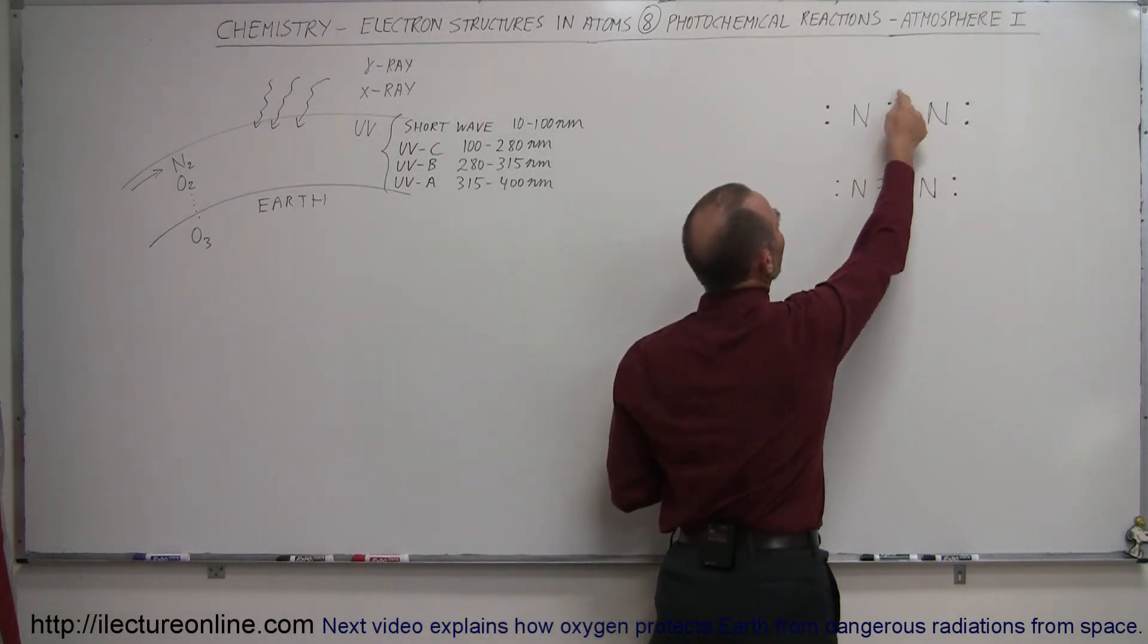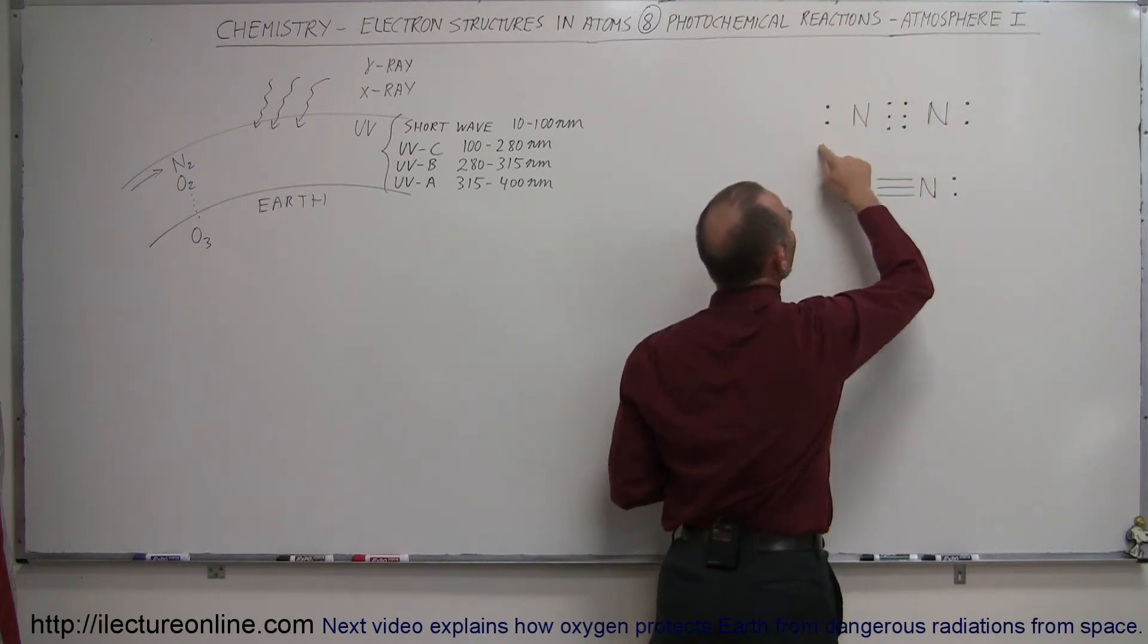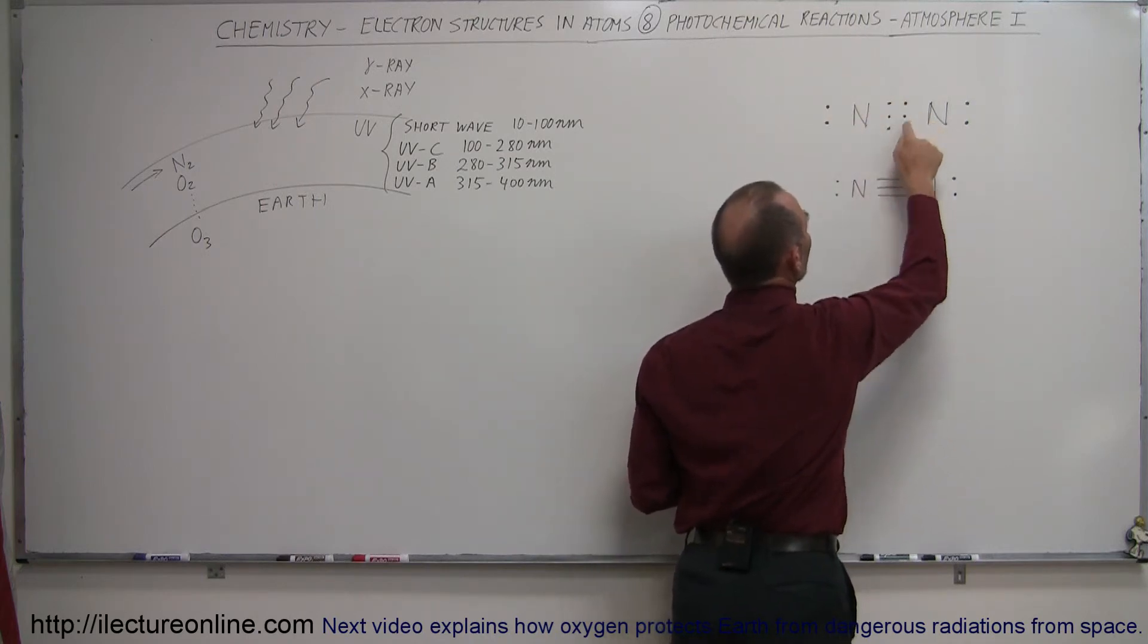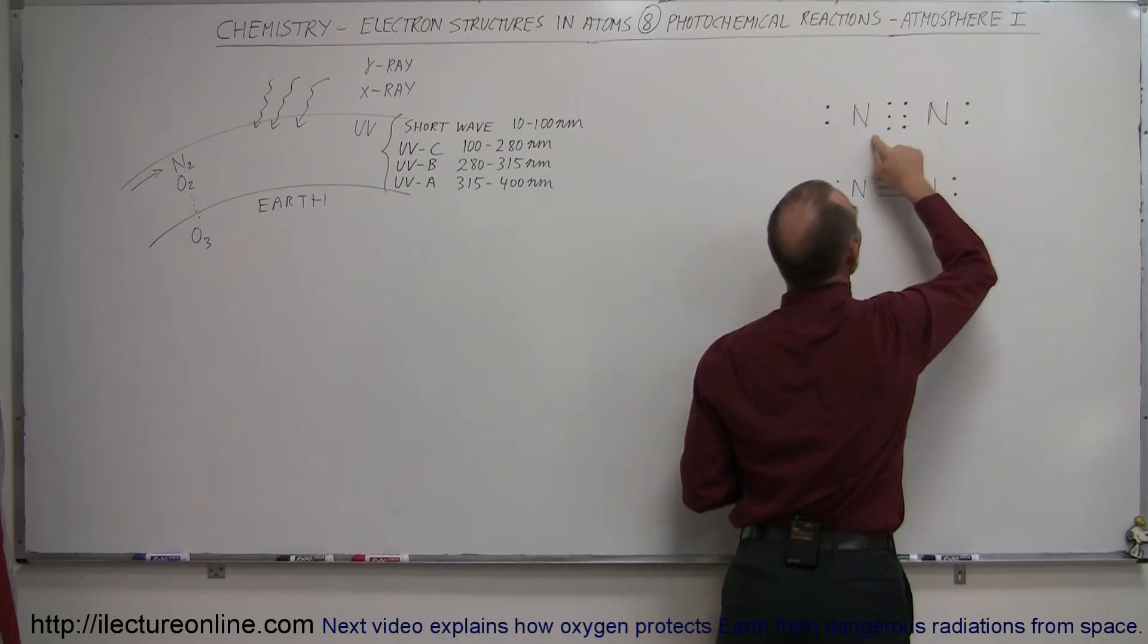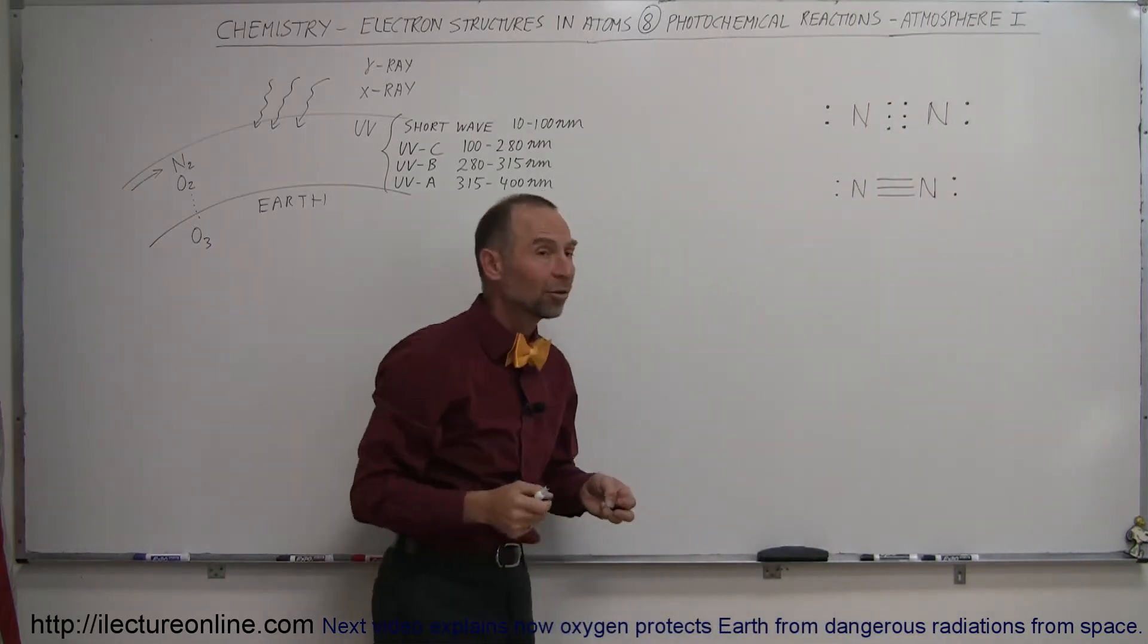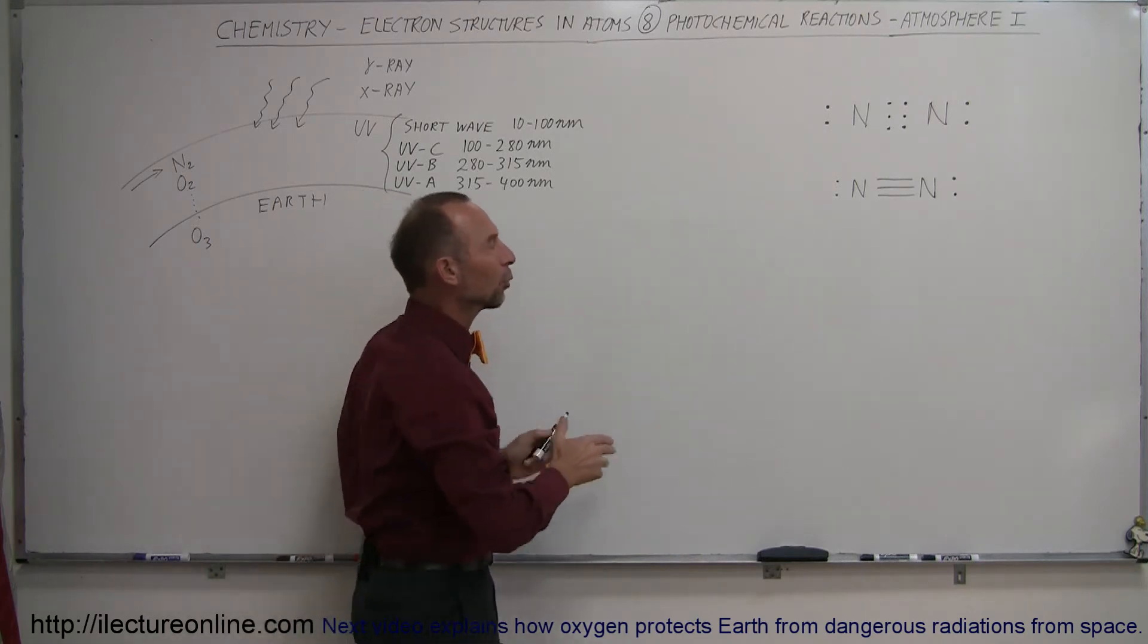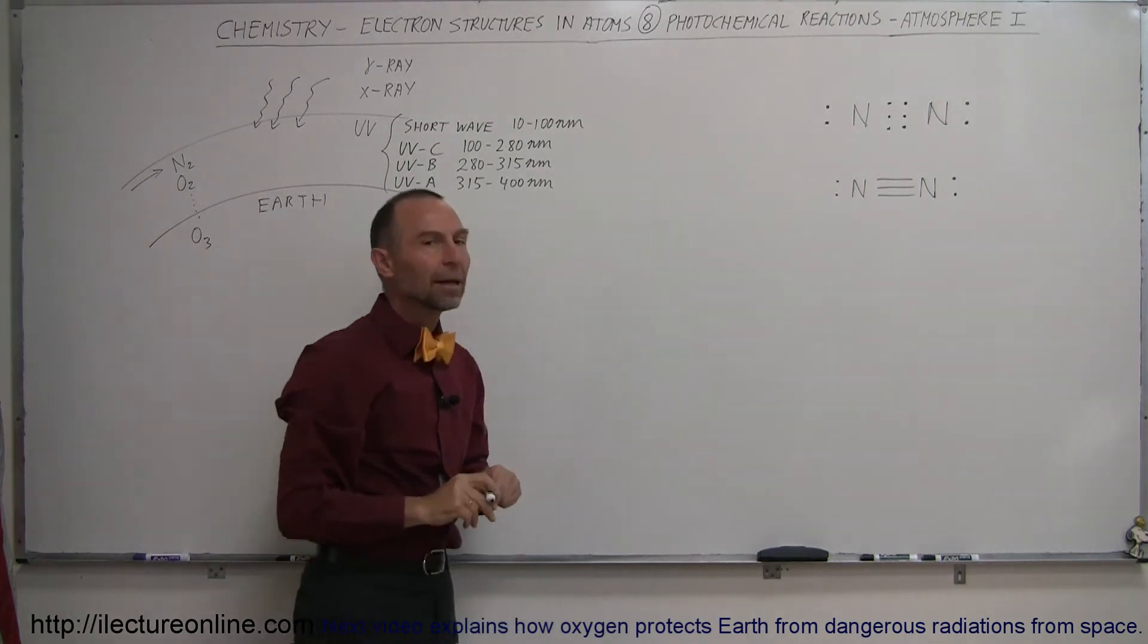They have a sharing relationship where three electrons from each atom, or a total of six electrons, are shared in such a way that part of the time this nitrogen atom has eight electrons, and part of the time this nitrogen atom has eight electrons. Roughly 50% of the time, so to speak. Because of that, they form what we call a covalent bond, or a triple bond.